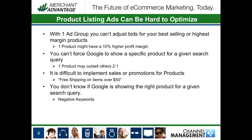With one ad group you can't adjust bids for your best selling or highest margin products. So if you have one product that sells at a 10% higher product margin than your others, you can't push this one out or raise the individual bid for this product because they are all lumped together in that one ad group.